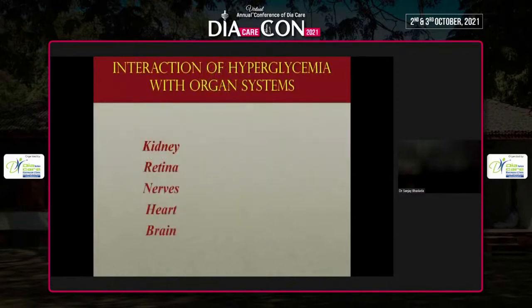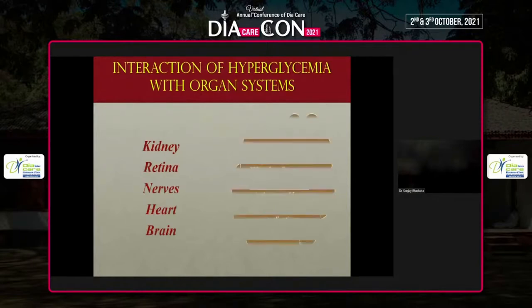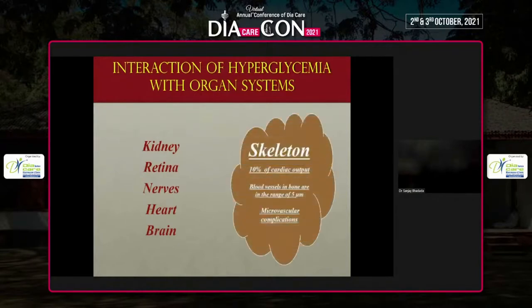We all know that diabetes or hyperglycemia interacts with all organ systems, whether it is kidney, retina, liver, or bone. The skeleton is probably the largest organ of the body, but the effect of hyperglycemia on the skeleton is less studied. We can classify the skeleton as a microvascular organ because the blood vessels in bones are around 5 micrometres — fitting the classification of microvascular complications.